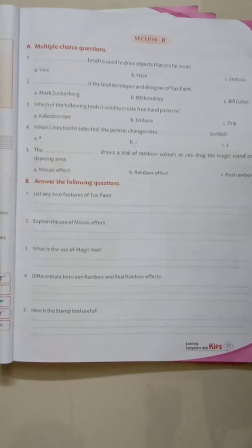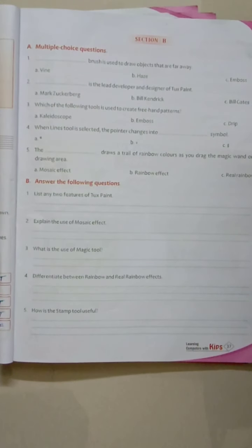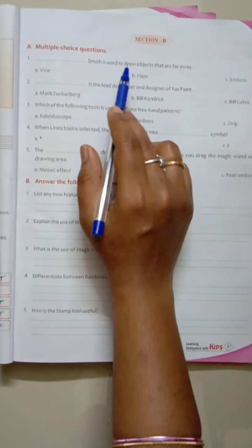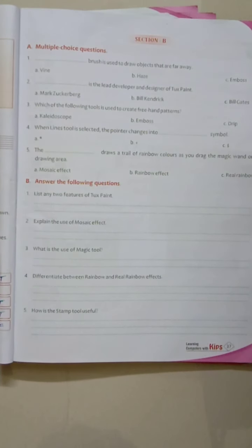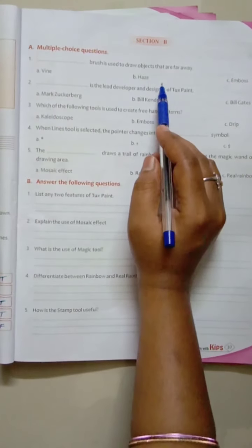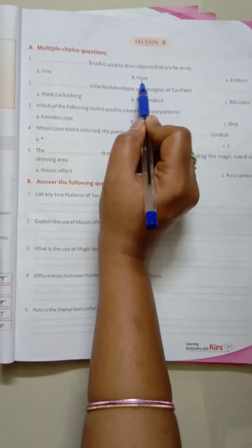Now let us start with section B, page number 31. Multiple choice questions. Let me read it. Dash brushes used to draw objects that are far away. Yes children, which brush is used to draw objects that are far away? Is it wine, haze, or embers? The right answer is haze.